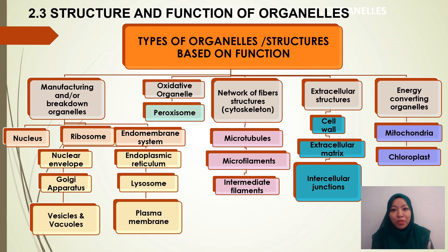Hi, welcome again for part 2.3: structure and function of organelles. As you can see in this diagram, these are the lists of organelles based on function. The first category is manufacturing and breakdown of organelles, which includes the nucleus, ribosome, and endomembrane system. The endomembrane system consists of six organelles: nuclear envelope, Golgi apparatus, vesicles, vacuoles, endoplasmic reticulum, lysosome, and plasma membrane. The oxidative organelle is the peroxisome.